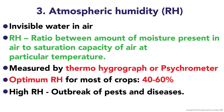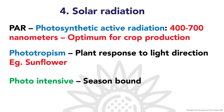Relative humidity is the invisible water in air. RH is the ratio between the amount of moisture present in air and the saturation capacity of air at a particular temperature. It is measured by thermohygrograph and psychrometer. The optimum RH for most crops ranges from 40 to 60 percent; high RH leads to more outbreak of pests and diseases. Solar radiation is measured in terms of photosynthetically active radiation, with the normal range for crop production being 400 to 700 nanometers.